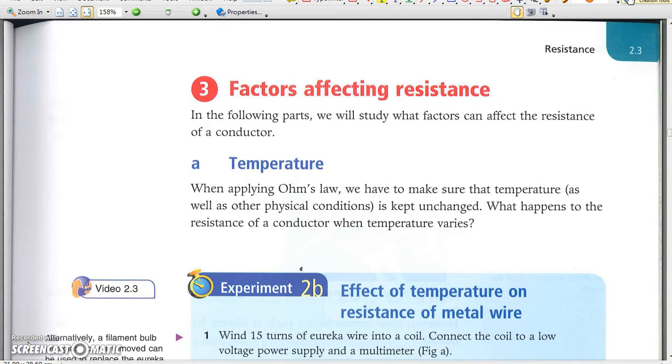The resistance of a metal wire is constant when small current flows because it can release the excess heat readily and keep its temperature constant. The following experiment investigates the effect of temperature on resistance of a metal wire.